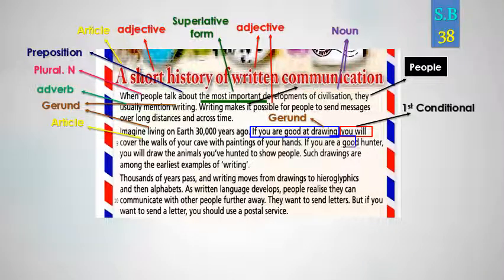'The' is an article — أداة تعريف. Now: 'if you are a good hunter' — here we have the condition. If you are a good hunter, the result is: 'you will draw the animals you hunted' — سوف ترسم الحيوانات التي تصطادها. So people 30,000 years ago communicated by drawing on the walls of their caves — في كهوفهم.